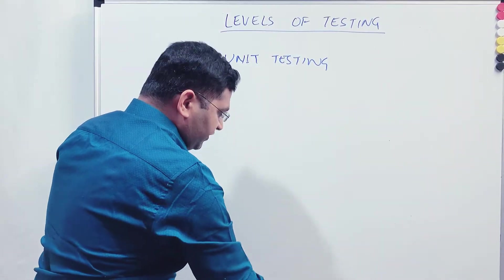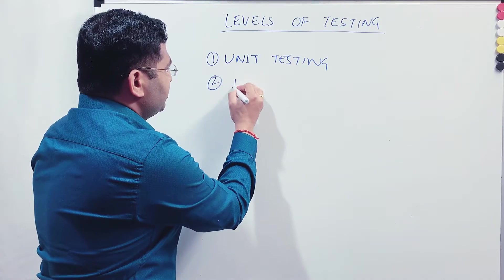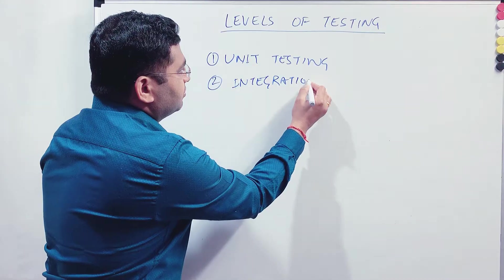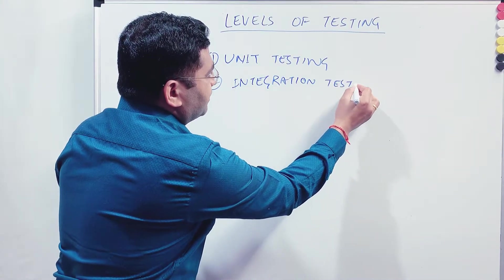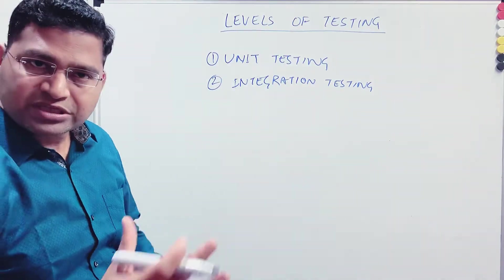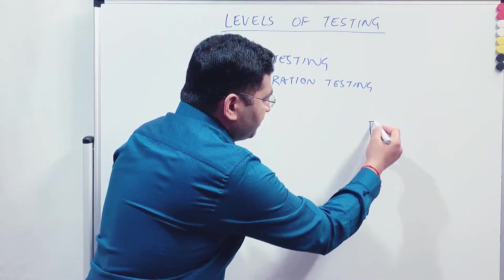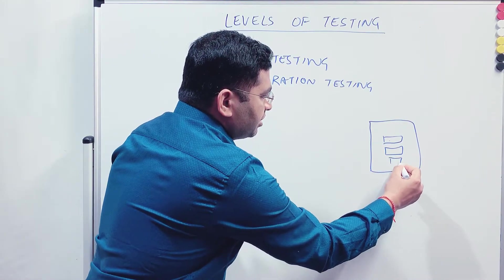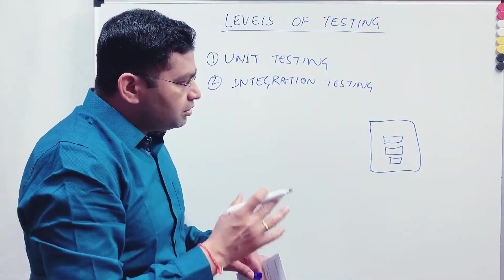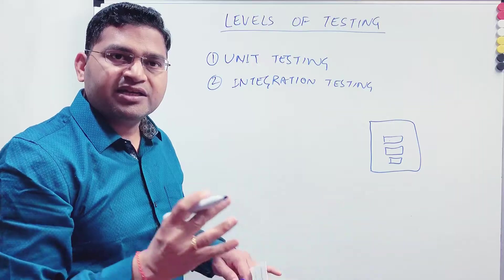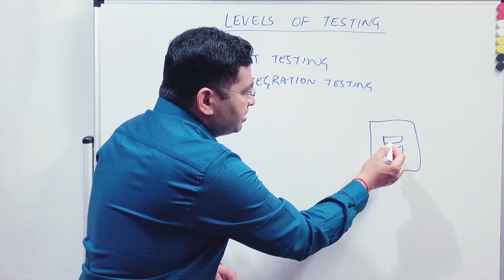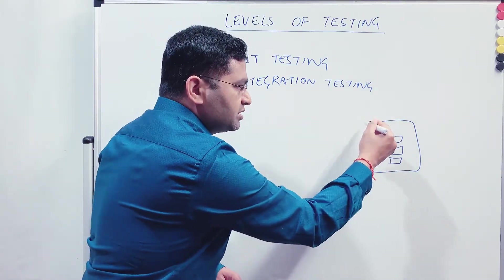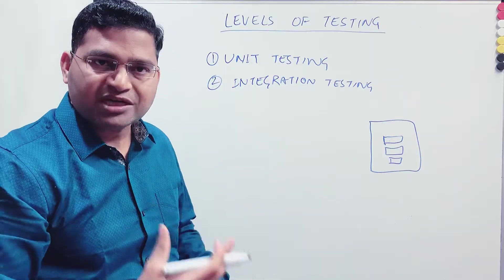The next phase is integration testing. What happens in integration testing is: the units are built — on the page, you have the username field, password field, and login button. Once all these smaller units have been tested and integrated together into one module, this page will be visible with the username, password, and login button.